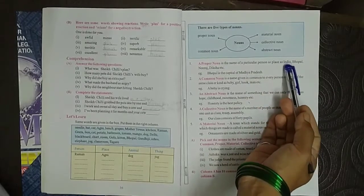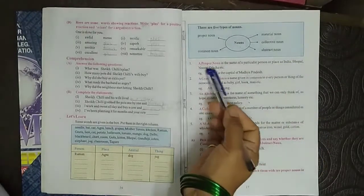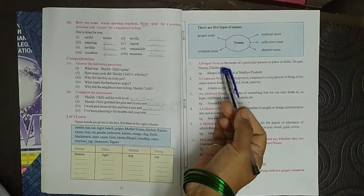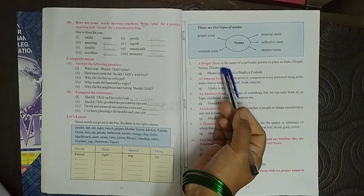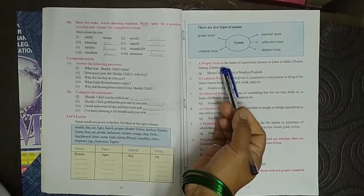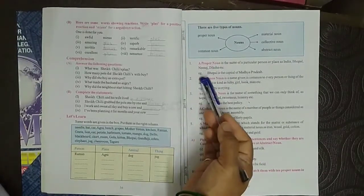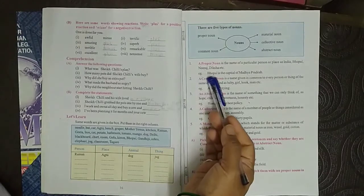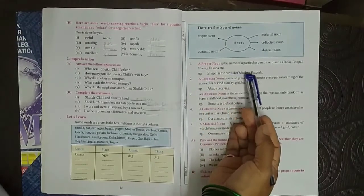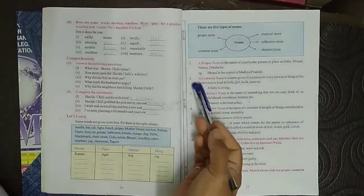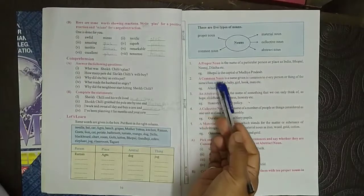Proper noun is a name of a particular person or place, like India, Bhopal, Neeraj, Deeksha, etc. These are names of any person or particular place. Here one example is given to you: Bhopal is the capital of Madhya Pradesh.